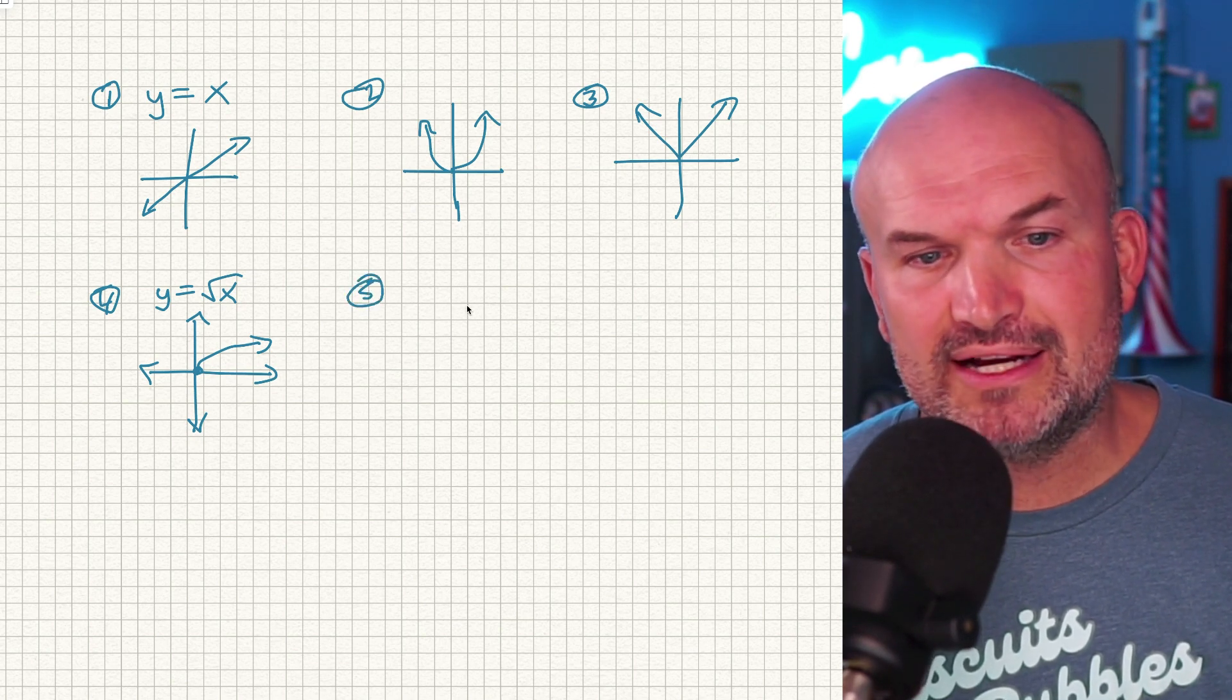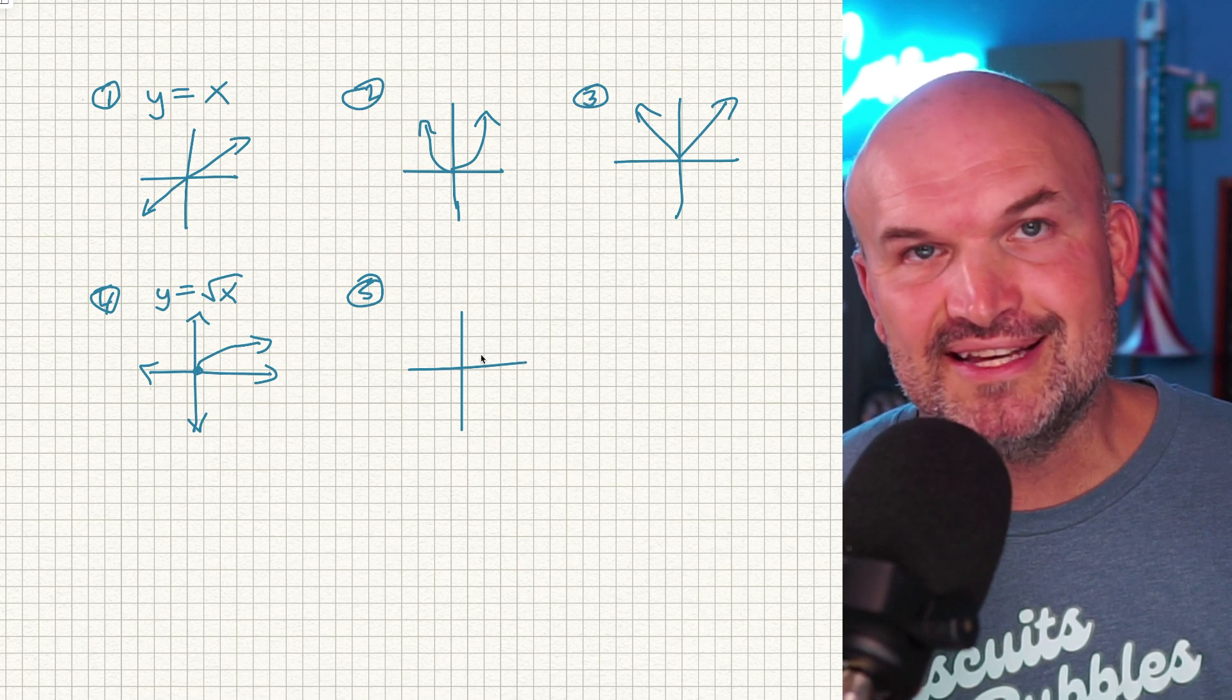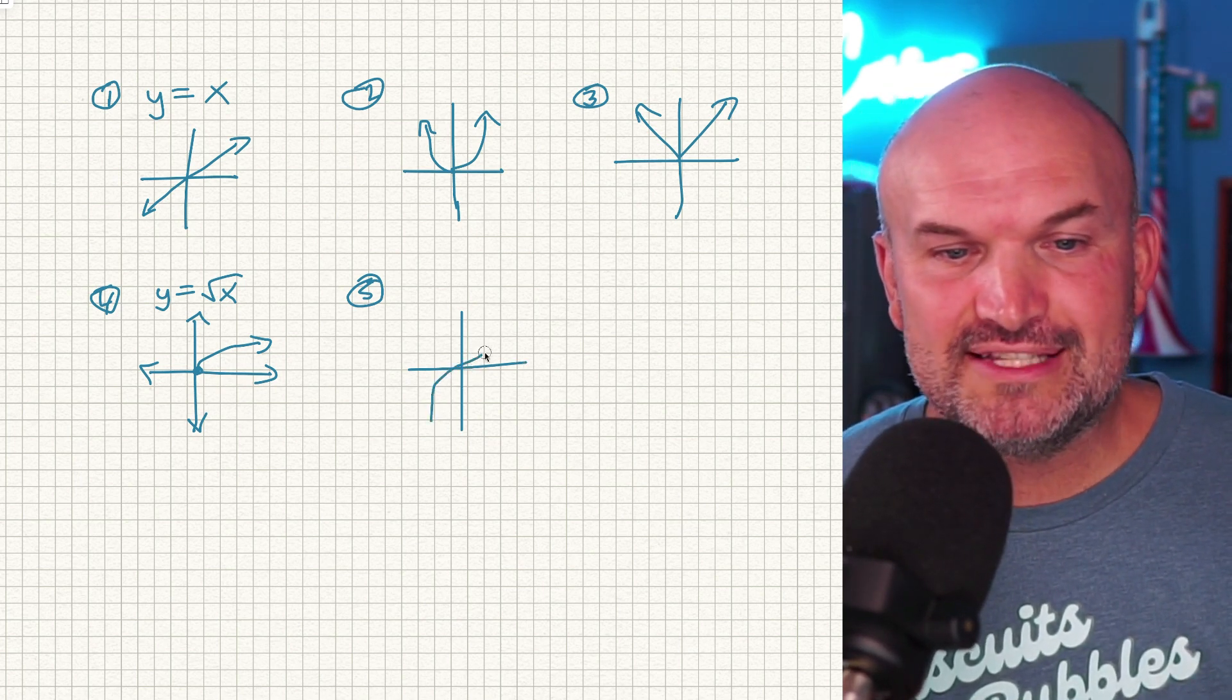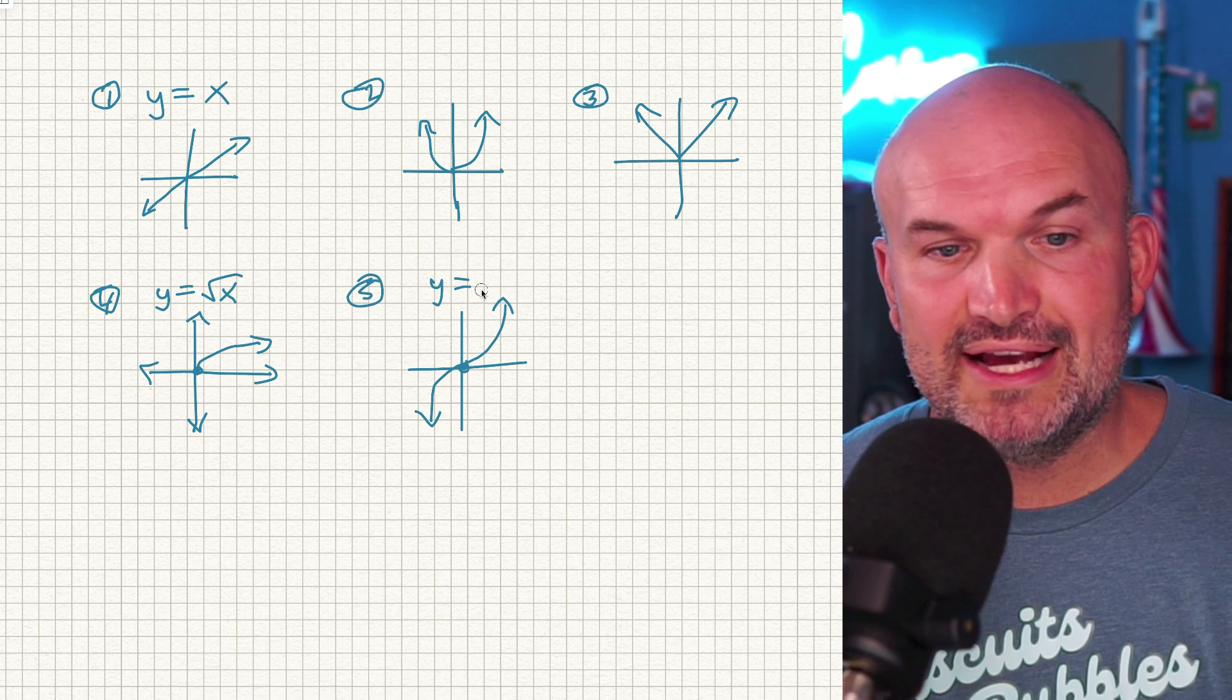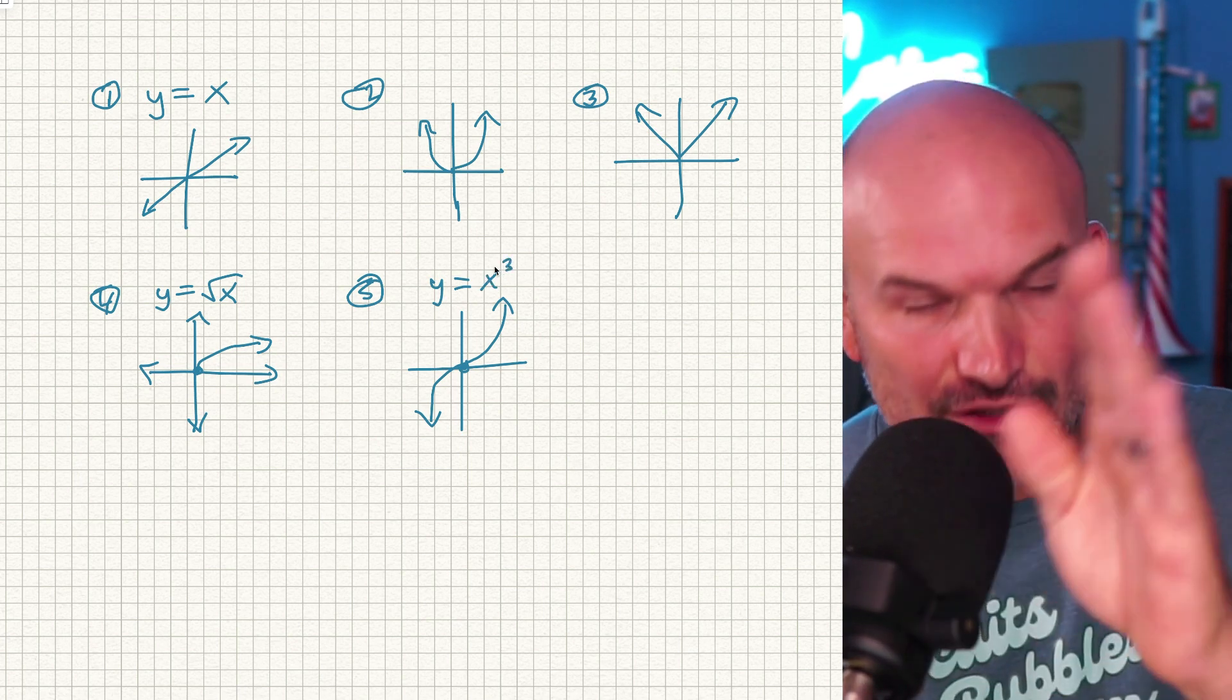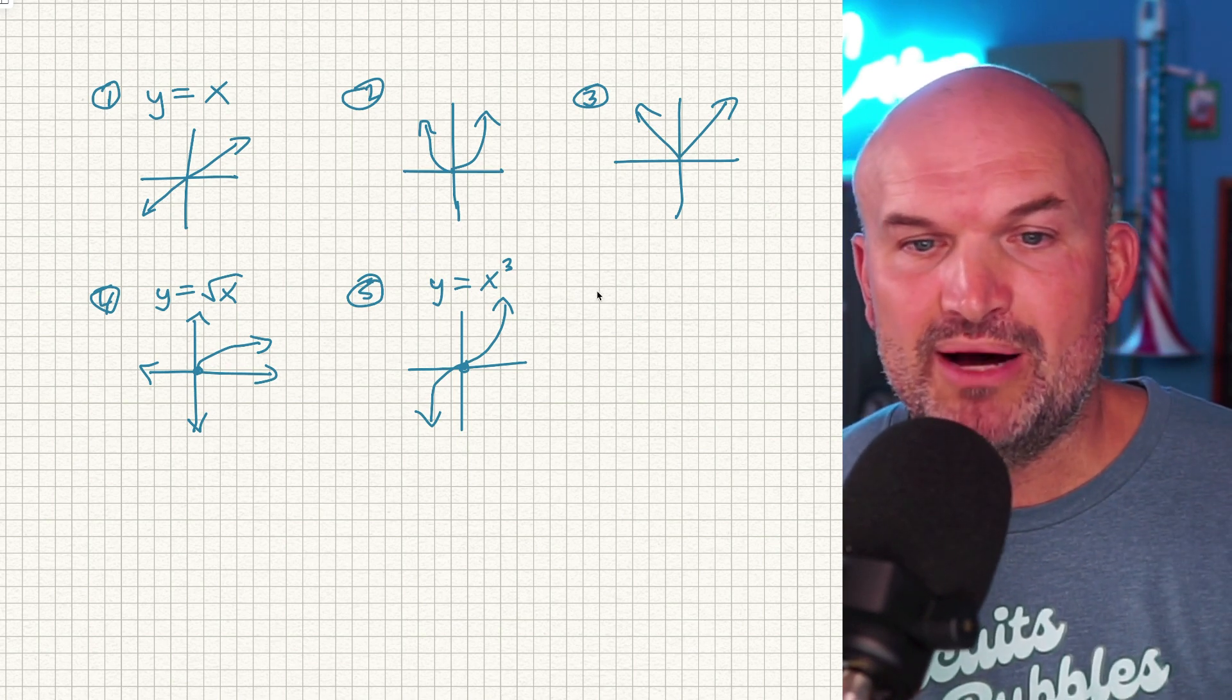Number five is not one that comes up a lot, but I feel like it comes up more than the logistics as well as the step function. So I wanted to include it. And it's also really important, especially when we start talking about polynomials in pre-calculus. This is going to be what we call our cubic function. So y is equal to x cubed. A lot of times you also consider this like the snake graph. So it's really helpful to understand this, as I mentioned, once we get into polynomials.